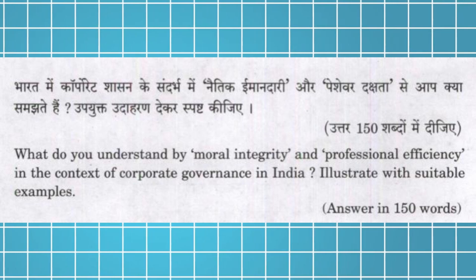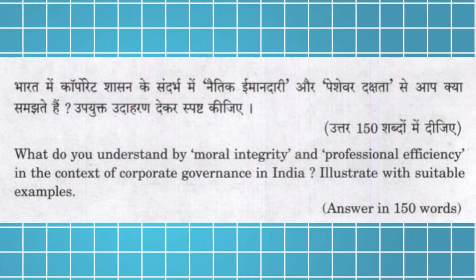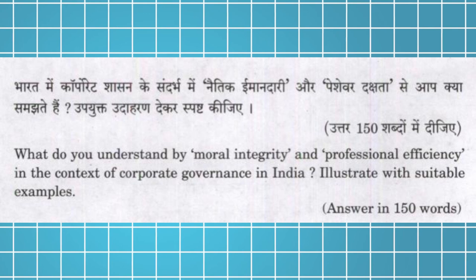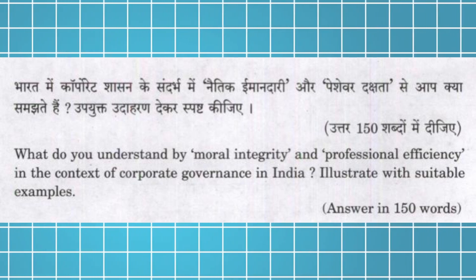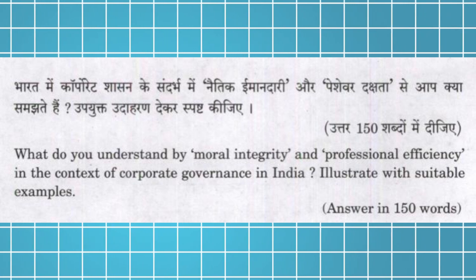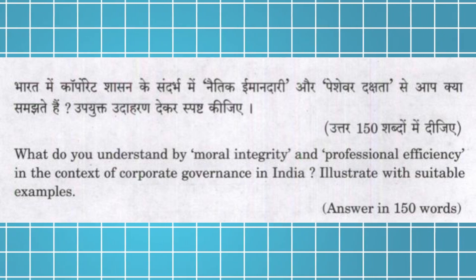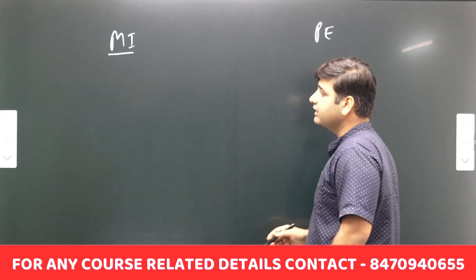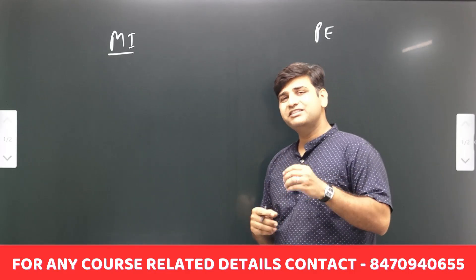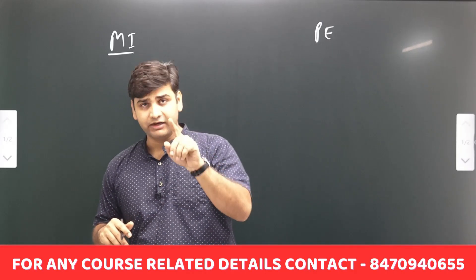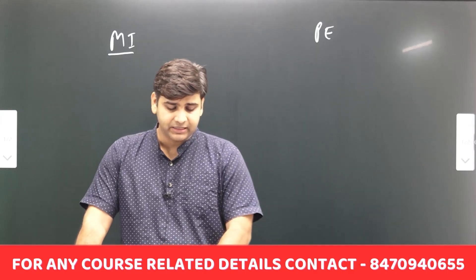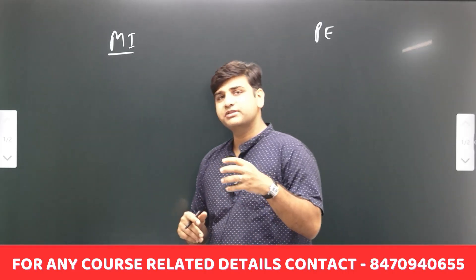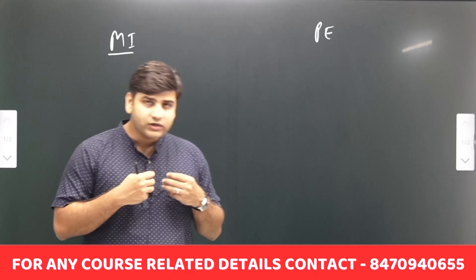The first question is from the 2023 ethics paper: 'What do you understand by moral integrity and professional efficiency in the context of corporate governance? Illustrate with suitable examples.' Three important concepts come up here: first is corporate governance, second is moral integrity, and the third is professional efficiency. You also have to give suitable examples.